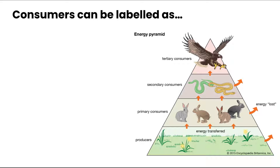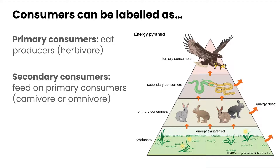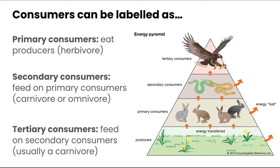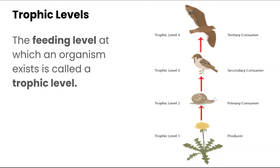Consumers can be labeled as primary, secondary, or tertiary, and they relate to our energy pyramid. Primary consumers eat producers — they are our herbivores, sitting just above producers in the energy pyramid. Secondary consumers feed on primary consumers and are typically carnivores or omnivores, at the next level up. Tertiary consumers feed on secondary consumers and are usually carnivores at the top of the pyramid. We also use the term trophic levels to describe the feeding level at which an organism exists.